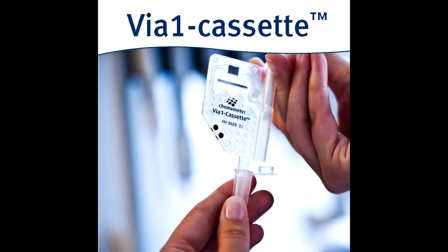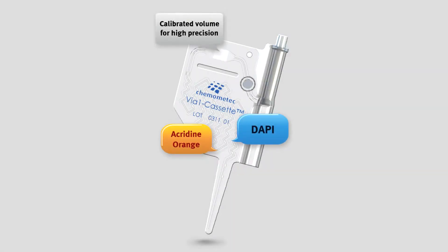The calibrated VIA1 cassette contains Acridine Orange, which stains all cells, and DAPI, which stains non-viable cells. No additional reagents are necessary.